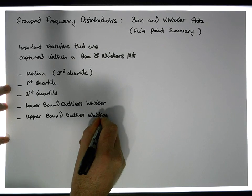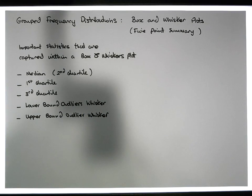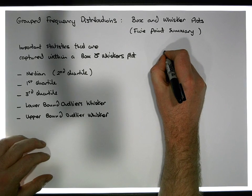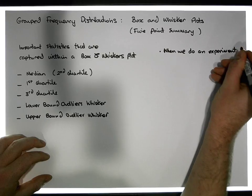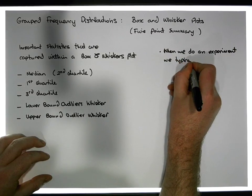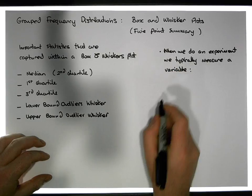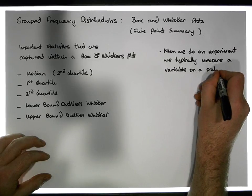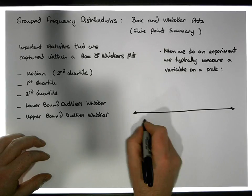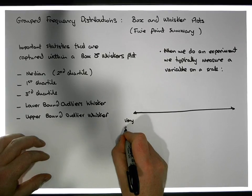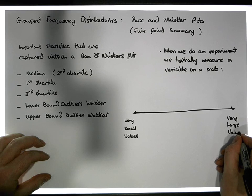Let's try to plot one of these. This video is looking at a specific implementation. When we do an experiment, we typically measure a variable, and that variable is on a particular scale. The variable ranges from very small values at one end to very large observations at the other end.